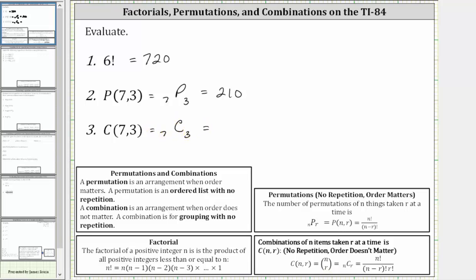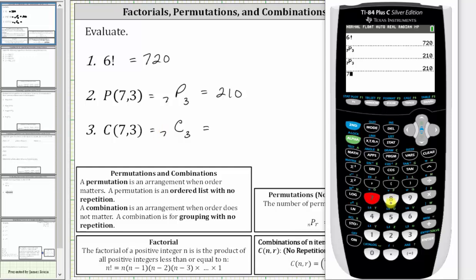Going back to the home screen, we press seven, math, right arrow to probability, and now because we have a combination, we select option three, and then enter three, enter. Seven choose three is equal to 35.